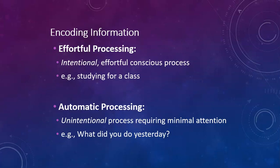Now the opposite of that would be automatic processing. Automatic processing is unintentional processing that requires minimal attention. You don't really need to pay attention to something, but you can still remember it. For example, if I ask you what did you do yesterday, you can probably tell me most of what you did. But yesterday when you were doing all of your activities, you weren't sitting down thinking, okay I need to remember this. You're just able to remember it automatically. And so that's what automatic processing is.